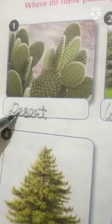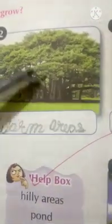Now the question is: where do these plants grow? Number one, cactus — this plant grows in the desert. Number two, banyan — banyan grows in warm areas and is the national tree of India. Number three, lotus — lotus is the national flower and it grows in ponds.